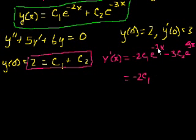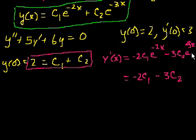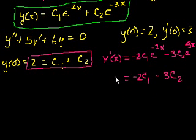With x equal to 0, e to the minus 0 is just 1, so we have minus 2c1. Minus 3c2, and again e to the minus 3 times 0 is just 1, so it's minus 3c2. And y prime of 0 equals 3. So our second equation is minus 2c1 minus 3c2 equals 3. Now we're back to first-year algebra — two linear equations with two unknowns.